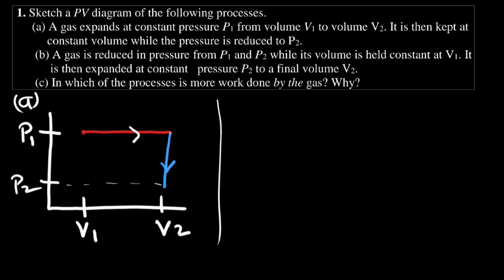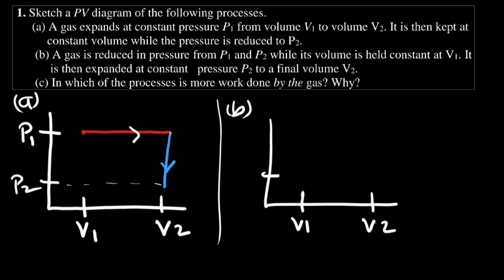For part B we do the same thing. We have a PV diagram with volume 1, volume 2, pressure 2, and pressure 1. The gas is first reduced from pressure 1 to pressure 2 at constant volume, then expanded at constant pressure 2 to volume 2, as stated in the question. So now we have drawn the sketches for both diagrams.